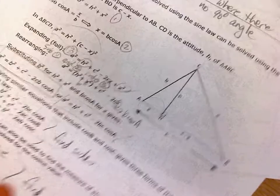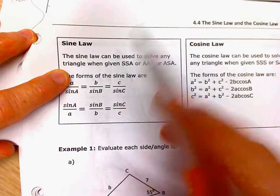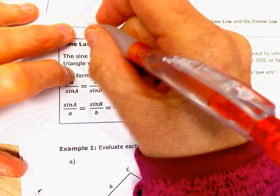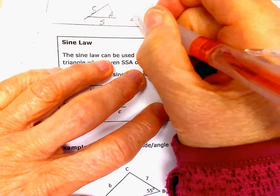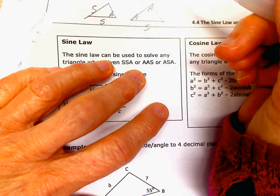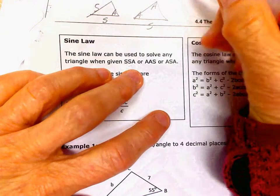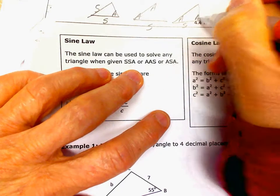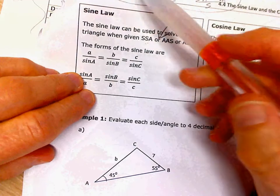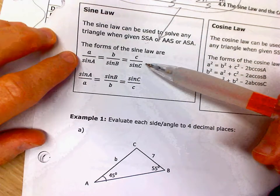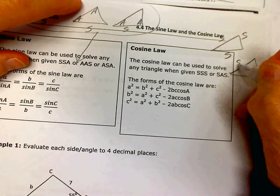Let's do a couple of examples — here's a summary. The sine law can be used to solve any triangle when given side-side-angle, angle-angle-side, or angle-side-angle. If you are given side-side-side or side-angle-side, then use cosine law. The given information has to be in appropriate places to use each equation.